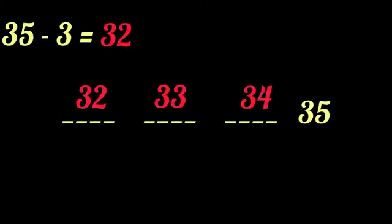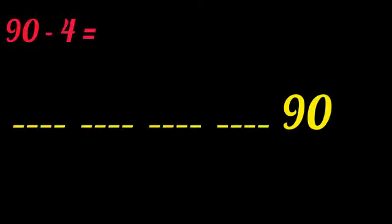Let us see one more question. 90 minus 4. Here, we should subtract 4 from 90. So, before 90, we should draw 4 blank spaces because we are subtracting 4. 1, 2, 3, 4. Now, we should count backward from 90.